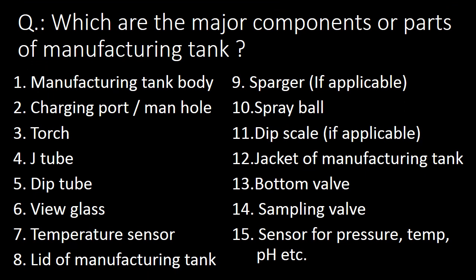Next question: which are the major components or parts of a manufacturing tank? Major components may vary with equipment supplier or process requirements. The 15 major components are: (1) manufacturing tank body, (2) charging port or manhole, (3) torch, (4) jet tube, (5) dip tube, (6) view glass, (7) temperature sensor, (8) lid, (9) sparger if applicable, (10) spray ball, (11) dip scale if applicable, (12) jacket, (13) bottom valve, (14) sampling valve, (15) sensors for pressure, temperature, or pH measurement.